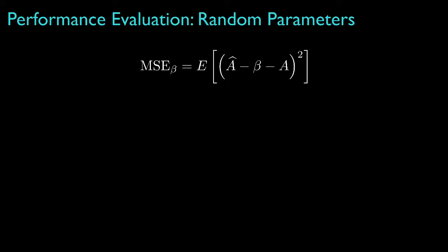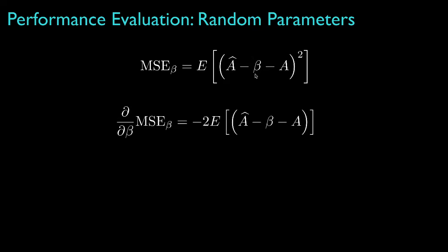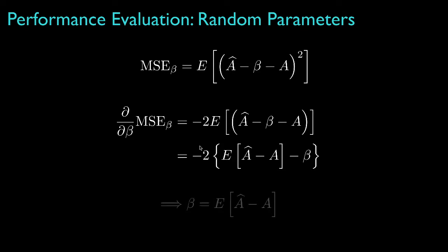Now let's look at the situation when we have any estimator a-hat, and we modify that estimator by subtracting some constant value beta from the estimator. What we'd like to do is see if we could improve the mean square error for a biased estimator by some smart choice of the offset. To find the value for beta that minimizes the mean square error, we differentiate the mean square error with respect to beta, and if we select beta to set that derivative equal to zero, we find that the best choice is to set beta equal to the bias. Simply put, if we have a biased estimator and we can determine the value for the bias, then subtracting that bias from the estimator will make it unbiased and will also lower its mean square error.